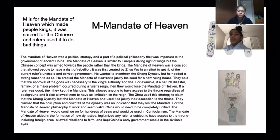M is for the Mandate of Heaven, which made the people kings. It was sacred for the Chinese, and rulers used it to do bad things.